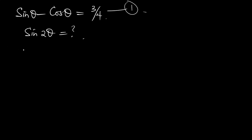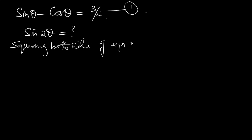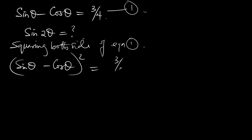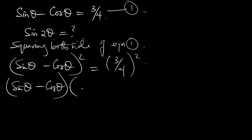Let me call this equation 1. What I will do is square both sides of equation 1. So squaring both sides, you now have sine theta minus cos theta, all squared, equal to 3 over 4, all squared, which gives 9 over 16.